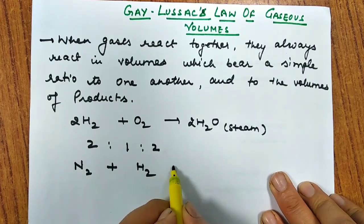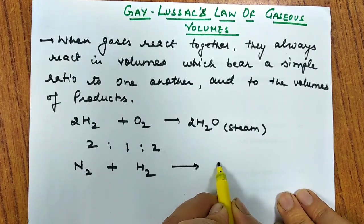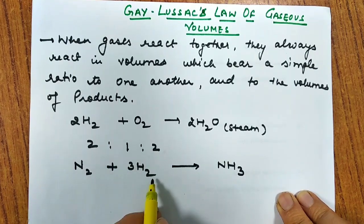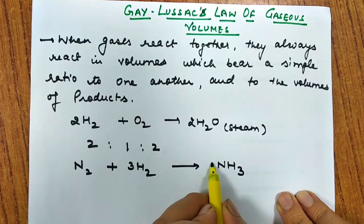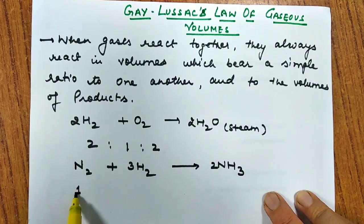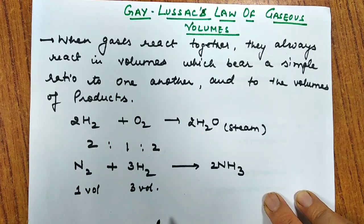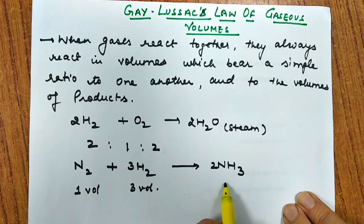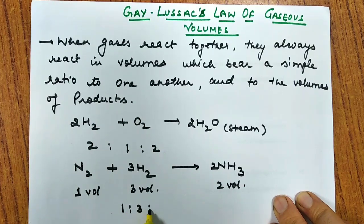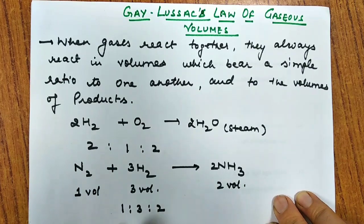Let us take another example of N₂ plus H₂. Haber's process gives us ammonia. After balancing the equation, we have 1 nitrogen plus 3 hydrogen gives us 2 ammonia. So in this reaction, it has been observed that when one volume of nitrogen combines with three volumes of hydrogen, it always forms two volumes of ammonia. This reaction also shows a simple ratio — that is 1 is to 3 is to 2 — between the volumes of reactant and product.